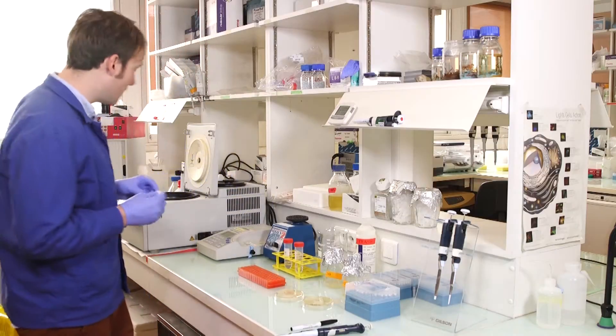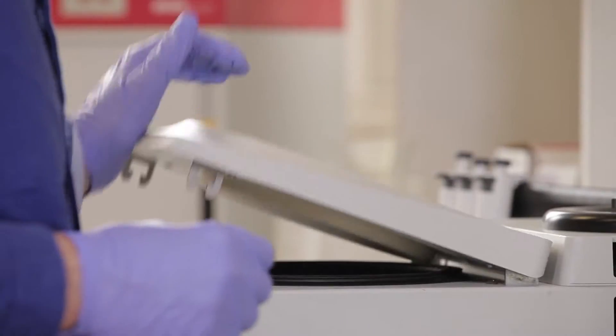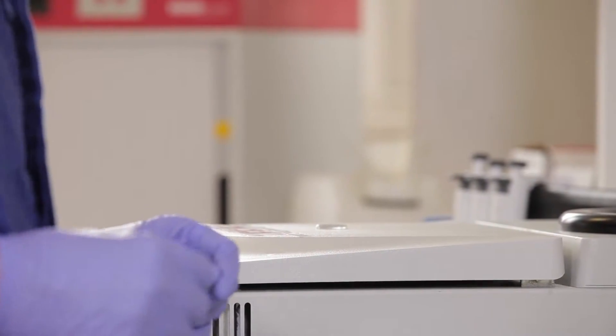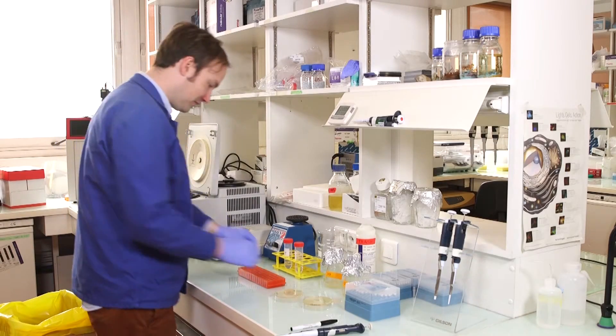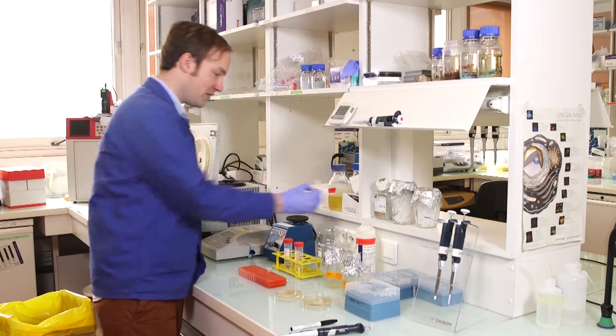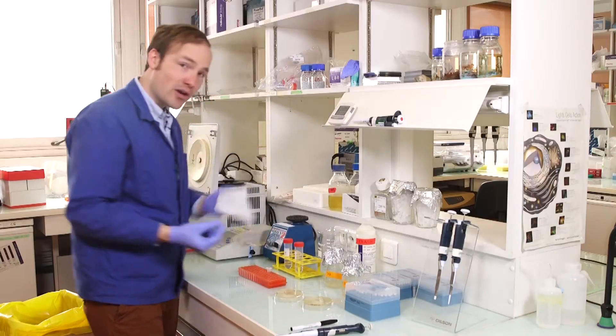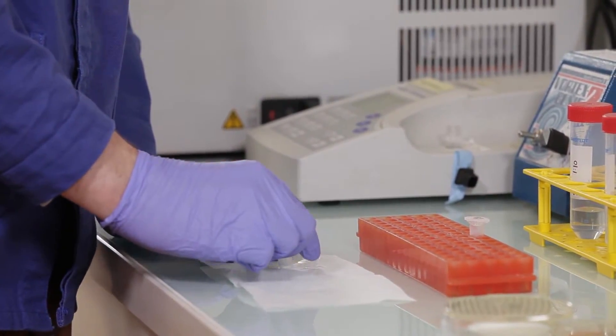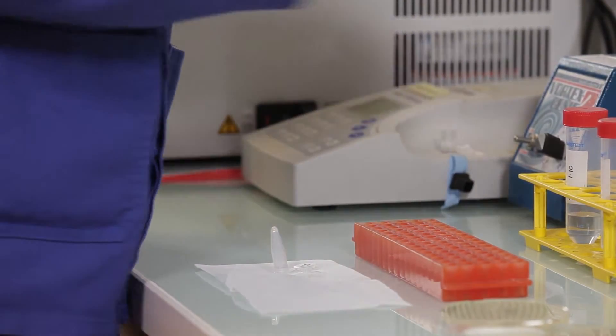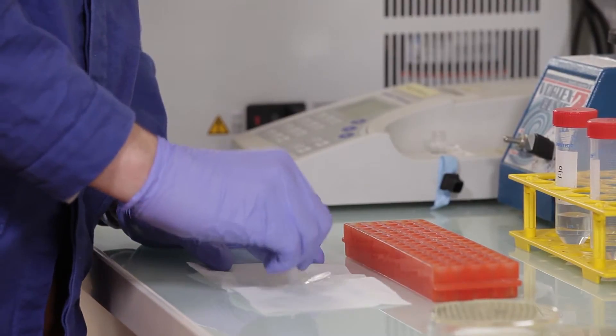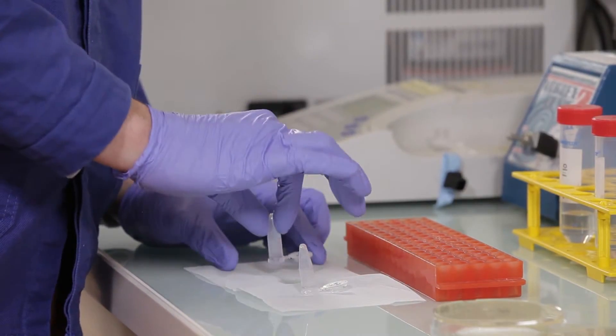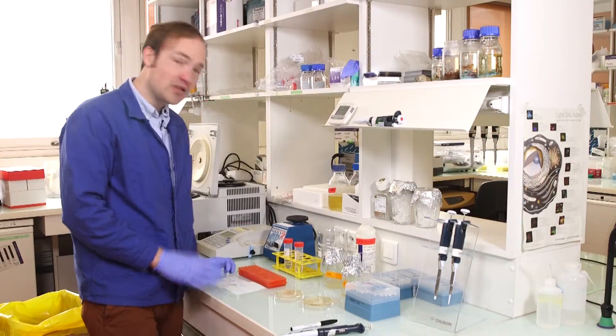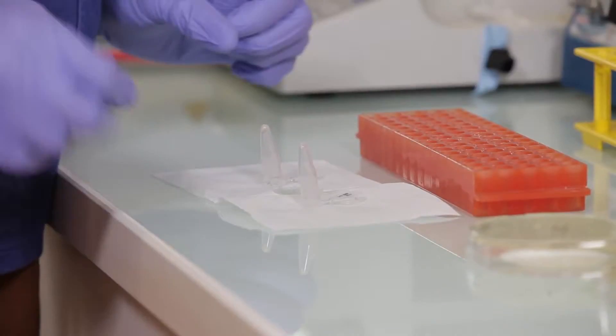So we take our 1 ml of cells into the centrifuge, spin them down, 30 seconds, maximum speed. Pop them out. Pour off the spent LB. And then what I'm going to do is invert these tubes on a sterile Kimwipe and kind of blot them. This will absorb just those last few drops of LB. It's also cleaner, like I don't have LB on my hands when I'm done. I like it. Dry them out a little bit. And you can see the pellet stays very firmly stuck to the bottom of the tube.